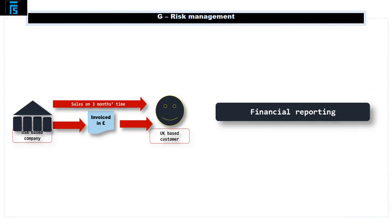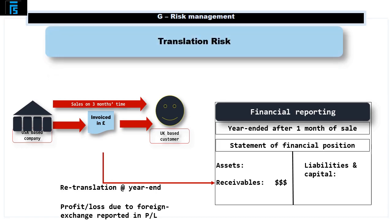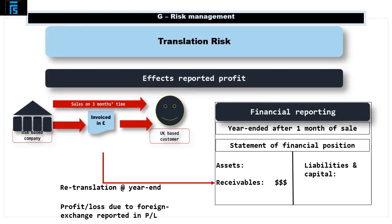Now suppose we have a financial reporting deadline, such as the year end, one month after we make the initial sale. At the year end we will have a foreign currency receivable on our statement of financial position — the amount that our UK customer owes us at that point. This receivable would need to be re-translated at the exchange rate prevailing at year end, and any movement in the exchange rate between the point of sale and the year end will therefore result in a profit or loss due to foreign exchange. This is known as translation risk and will affect reported profits.